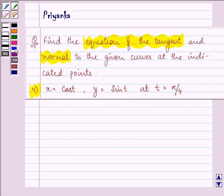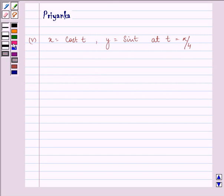We are given x equal to cos t, y equal to sin t, at t is equal to pi by 4. So here first of all we will differentiate both x and y with respect to t.